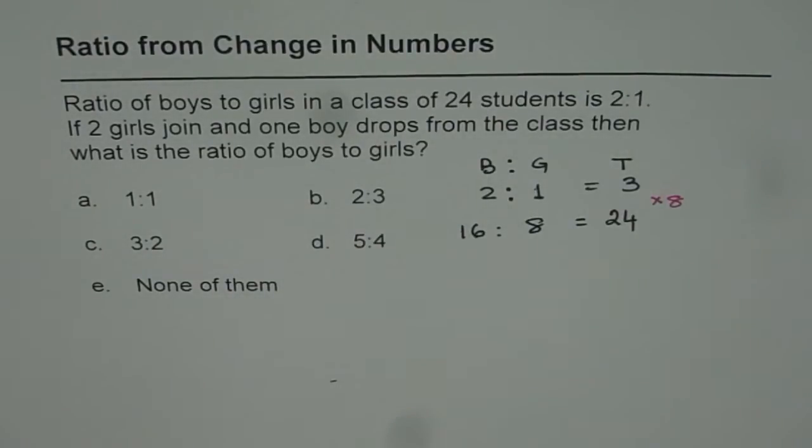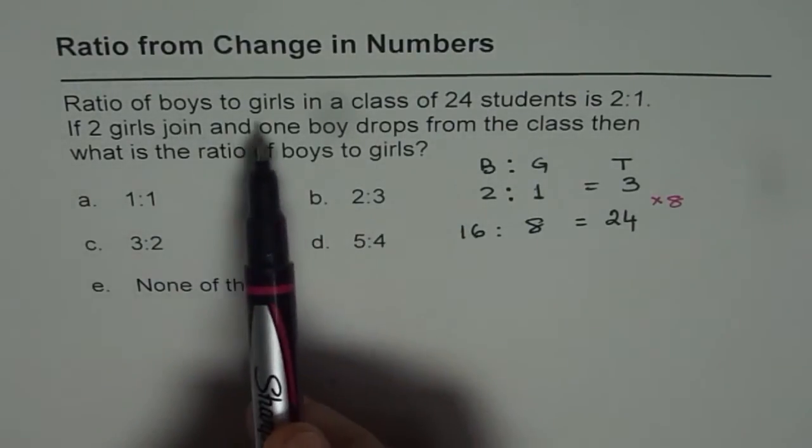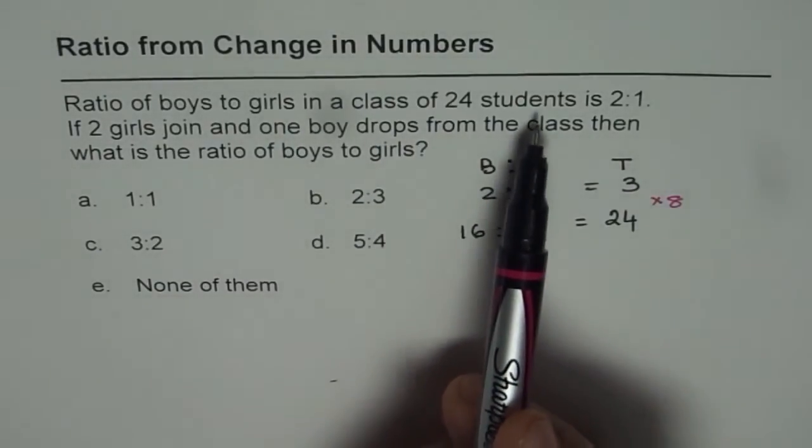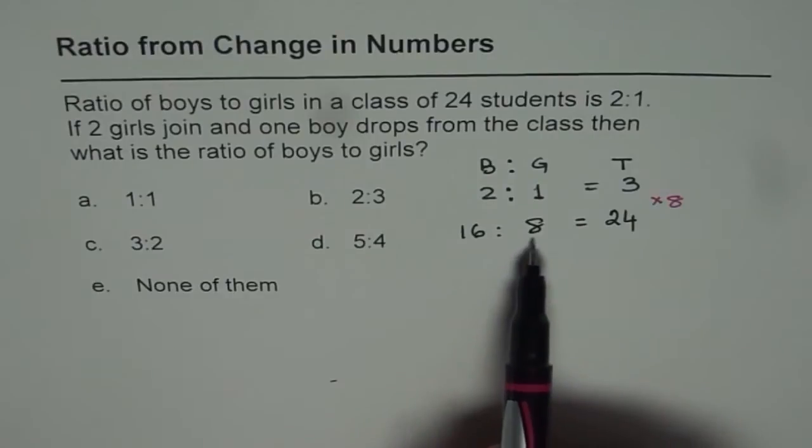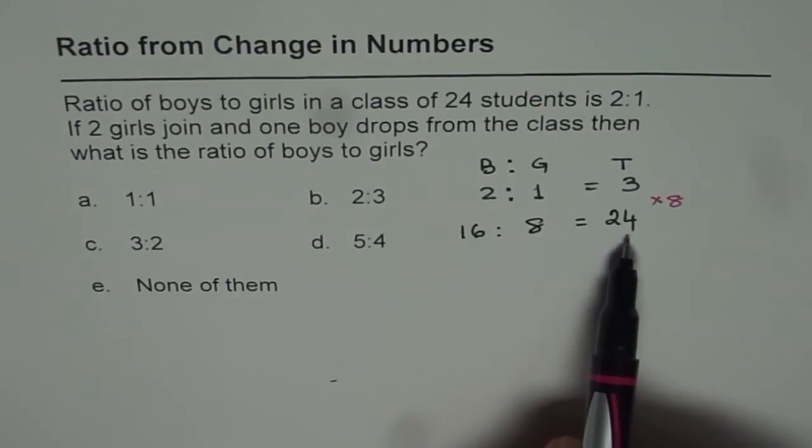Now let's read the question once again. The ratio of boys to girls in a class of 24 students is 2 to 1. Okay? So that means there are 16 boys and 8 girls in a class of 24 students.